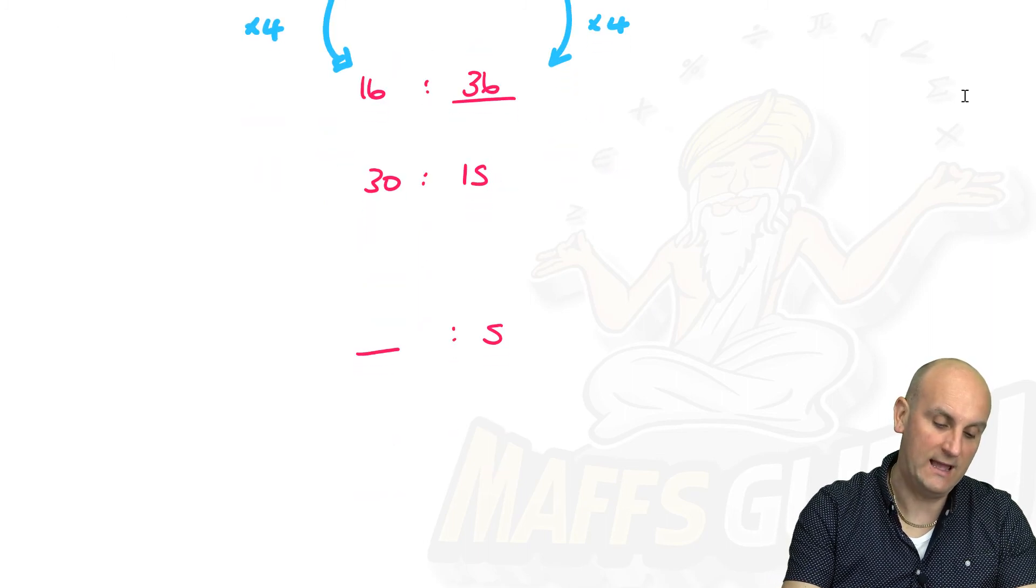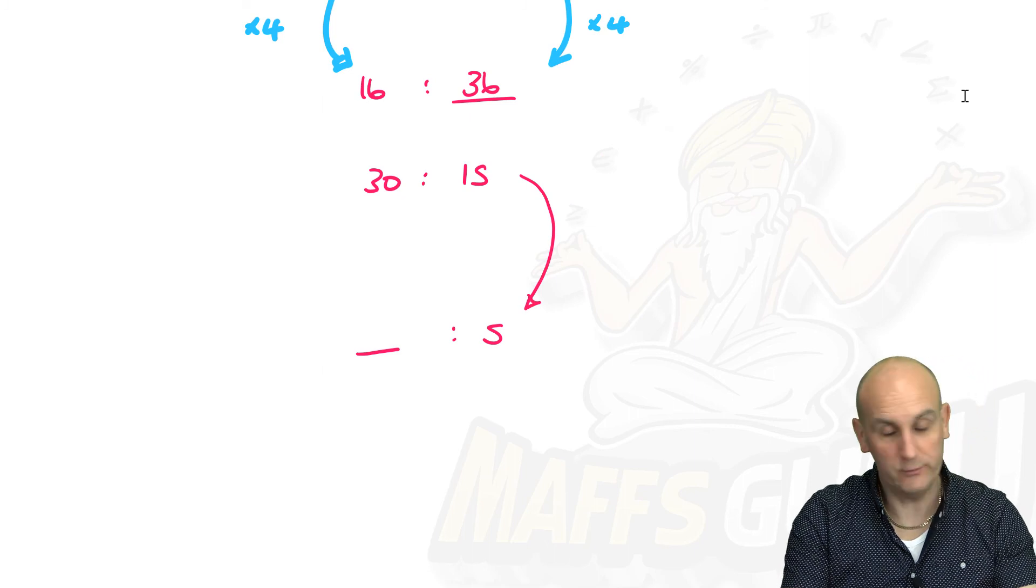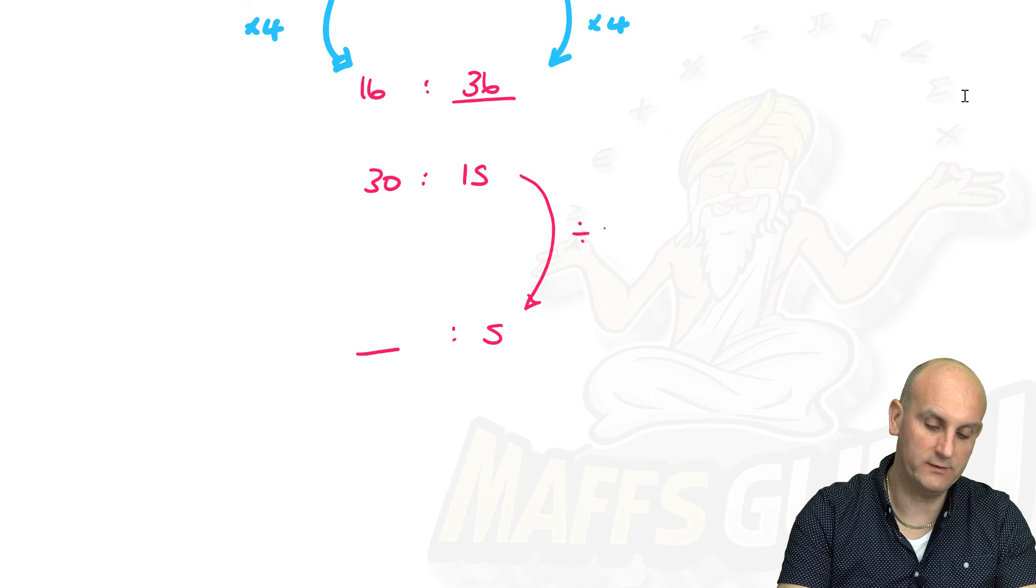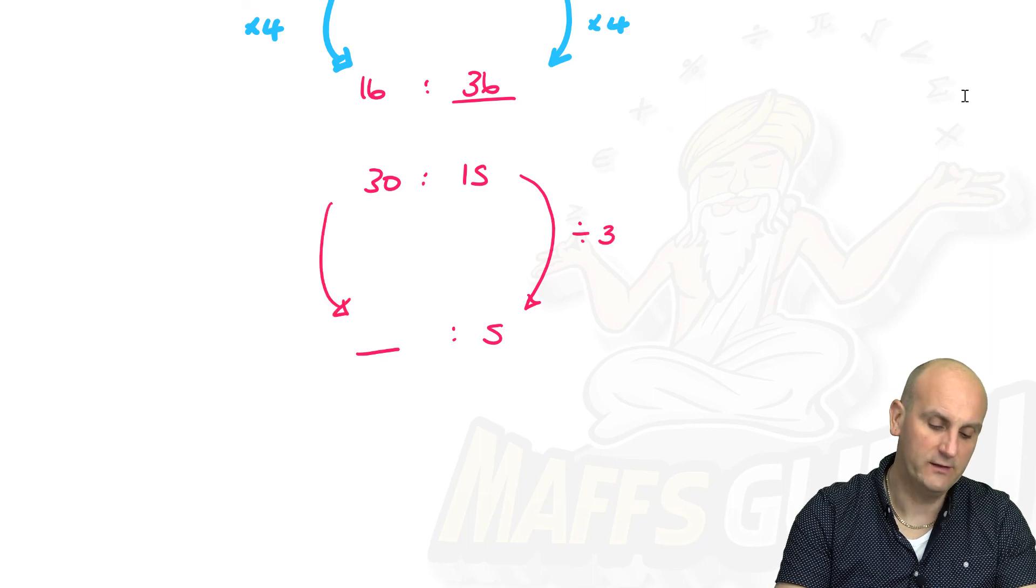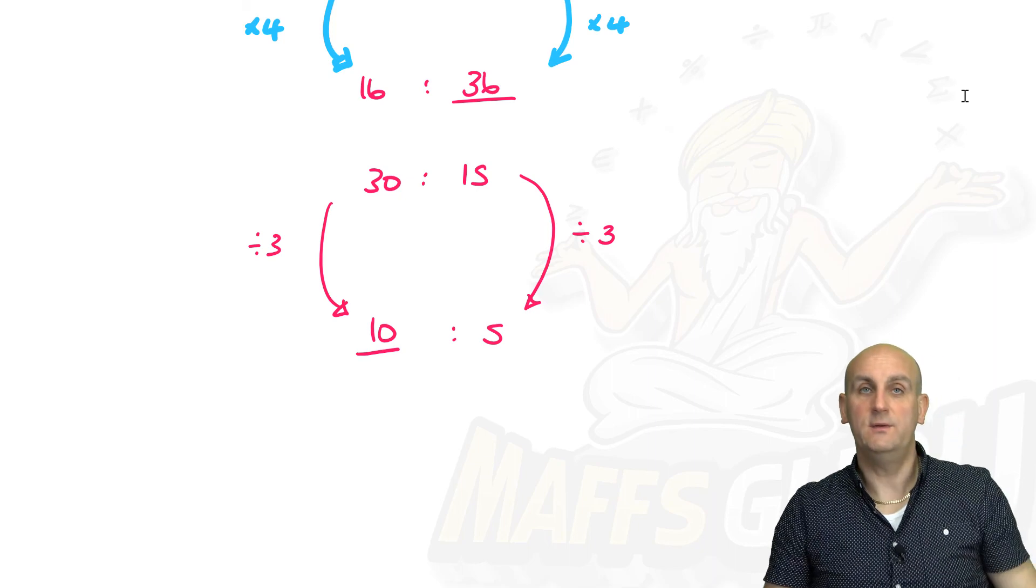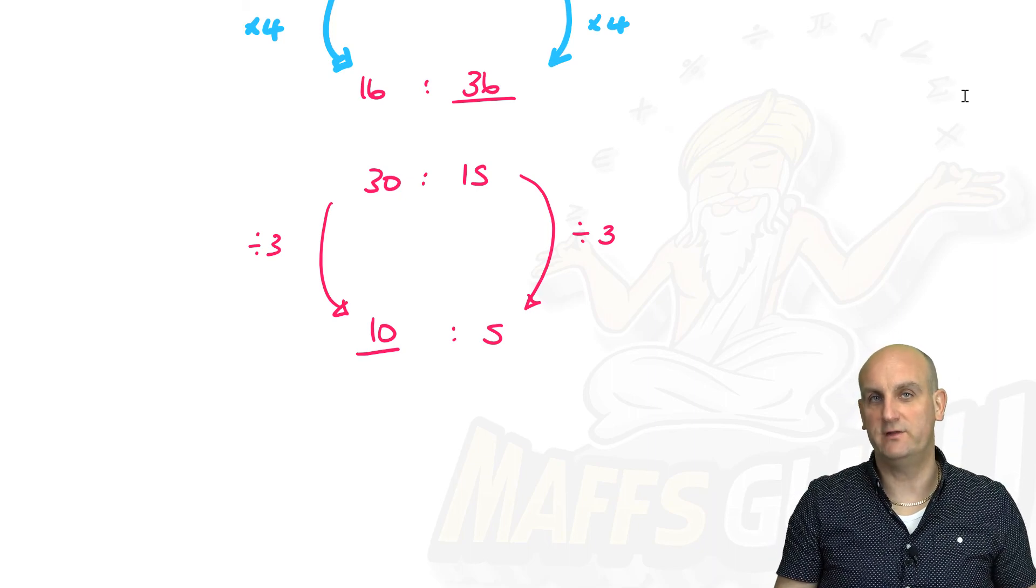What about thirty to fifty-fifteen, and it wanted us something to five? Well we're doing it a different way. How do I go from fifteen to five? No, don't take away ten, that's not helpful. I'm going to divide by three, and if I do that to the other side as well, thirty divided by three gives me ten. And there we go.